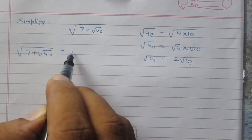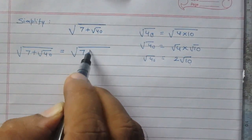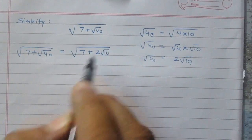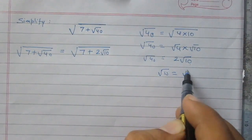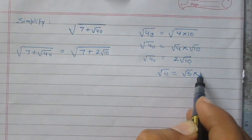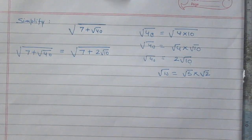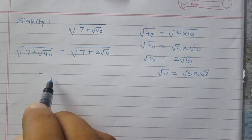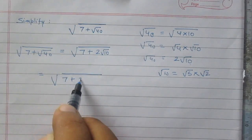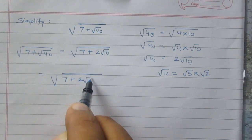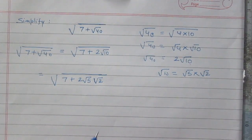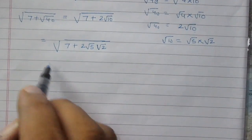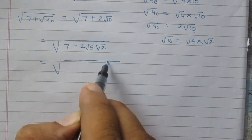So we can write square root of 7 plus square root 40 as square root of 7 plus 2 times square root 10. Now square root 10 can be written as square root 5 multiplied by square root 2. So it is equal to square root of 7 plus 2 times square root 5 times square root 2. We know that 5 plus 2 is 7, so we can further simplify it as square root of whole 2 plus 5.